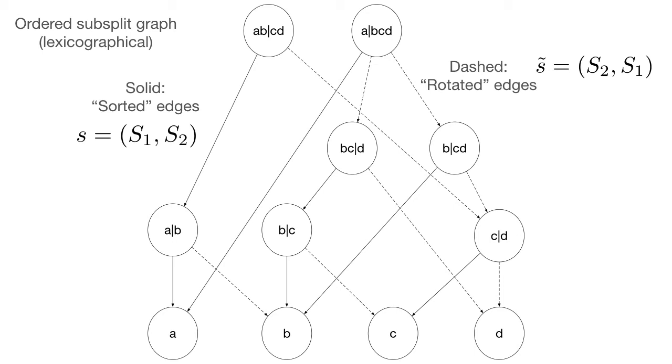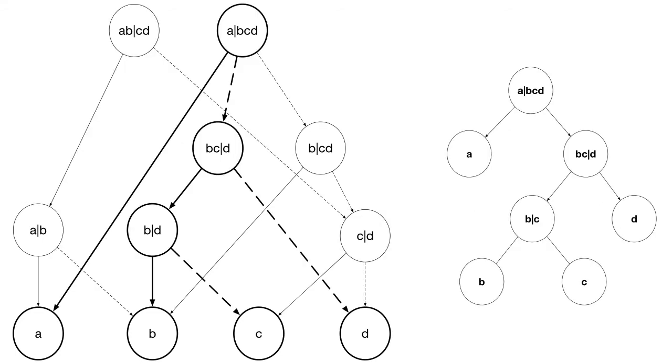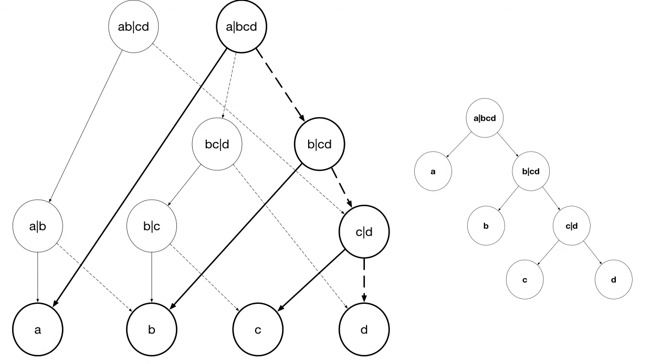But let's not think about the complicated version. Let's just say we have two types of edges, sorted and rotated. And sorted basically connects two subsplits, parent and child, where child subsplits the clades on the left side. And the rotated edges connect the parent and child, where child subsplits the clade on the right side of the vertical bar. So note that this graph encapsulates all three trees that we started with here highlighted in bold.